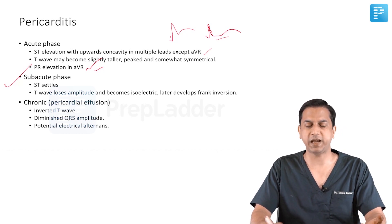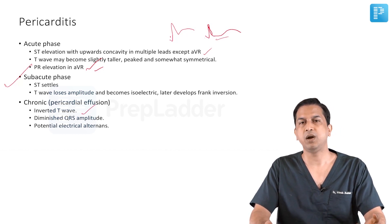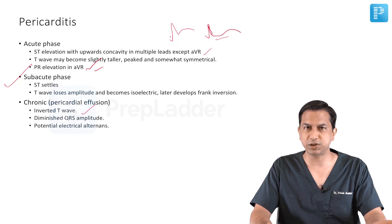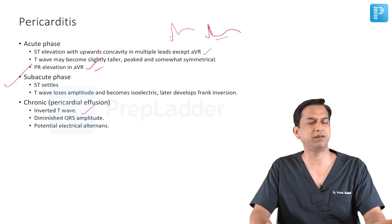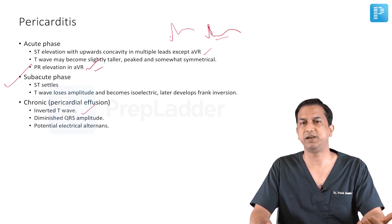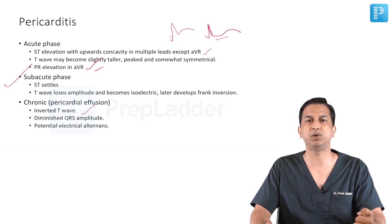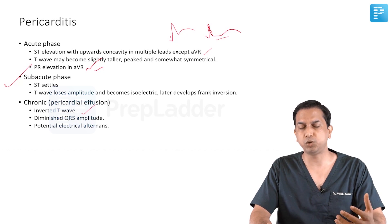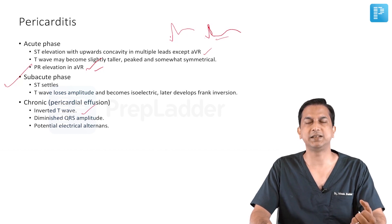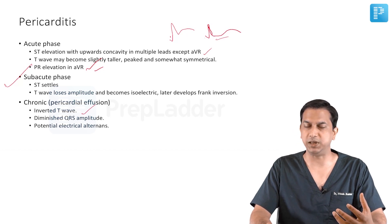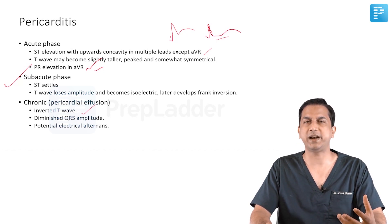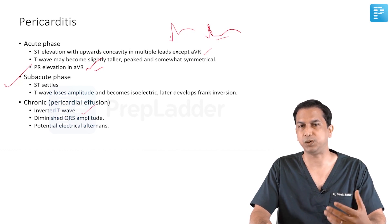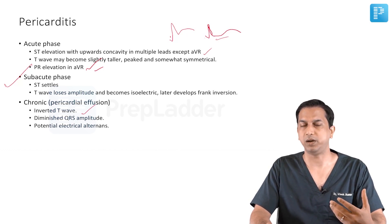In the chronic phase you can have inverted T waves, or there can be complications of pericarditis in the form of pericardial effusion. This will result in diminished QRS amplitude and electrical alternans — beat to beat variation because the heart is in a fluid bed, it moves with each beat, and that is why the QRS amplitude varies beat by beat.